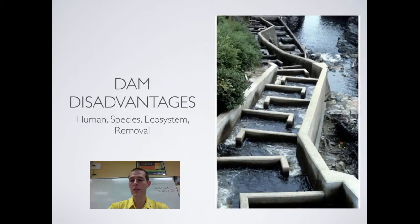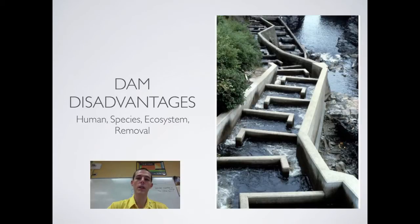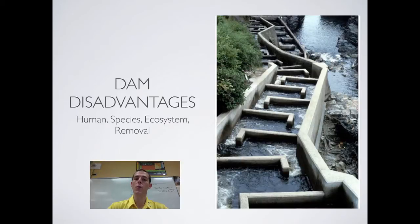As far as the drawbacks of dams, there are human, species, and ecosystem considerations. The human cost: when you build a dam, the land behind it floods. When the Three Gorges Dam was built in China — the world's biggest hydroelectric project — about 1.3 million people were displaced and around 1,300 villages disappeared, along with major cities. All those people had to move because the water flooded their area as a result of the dam.